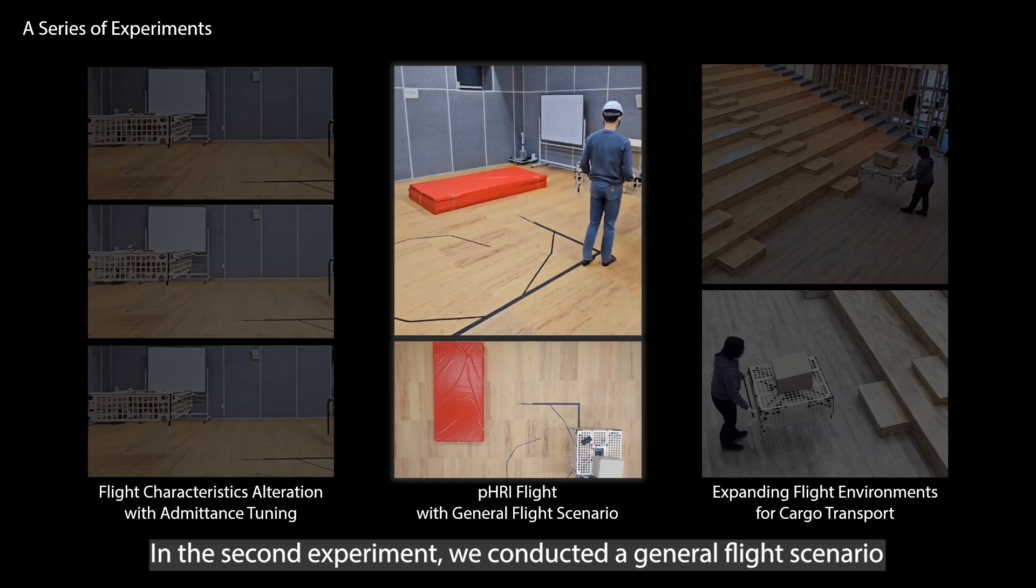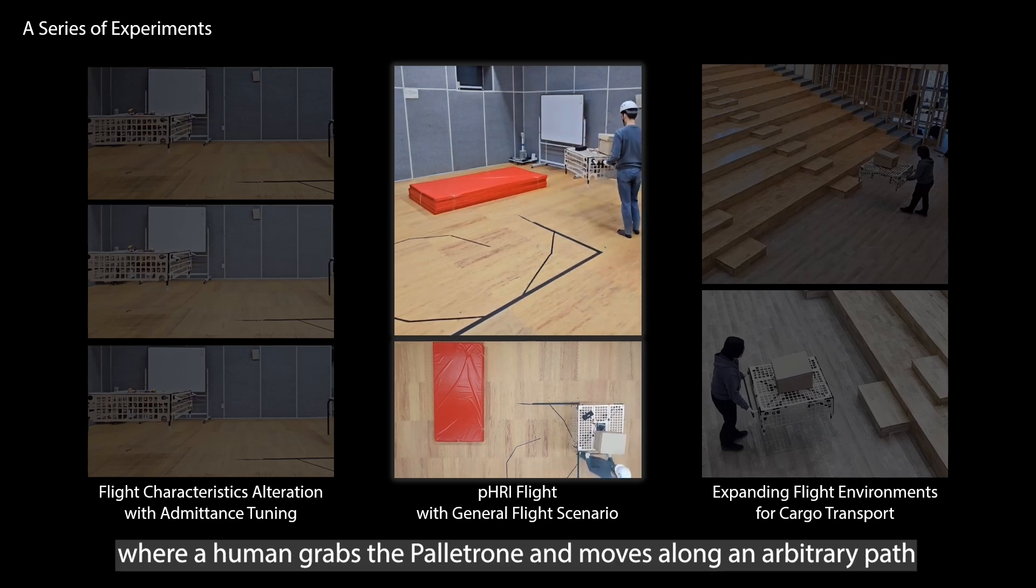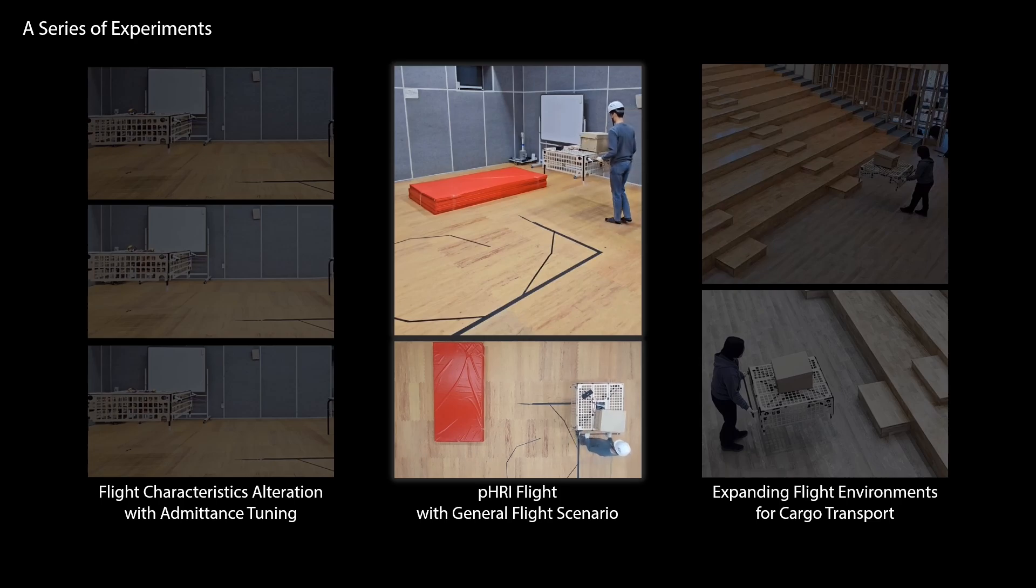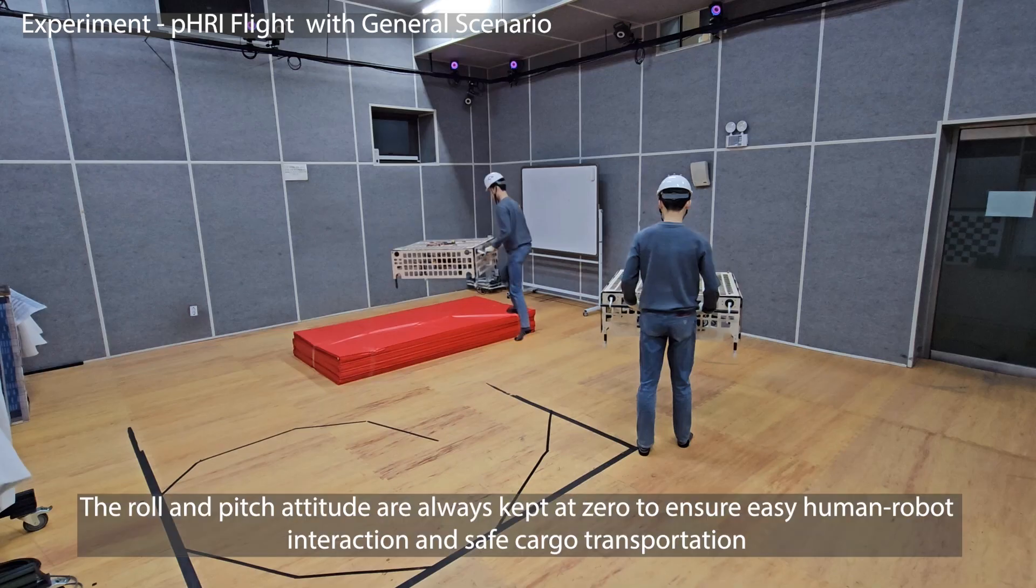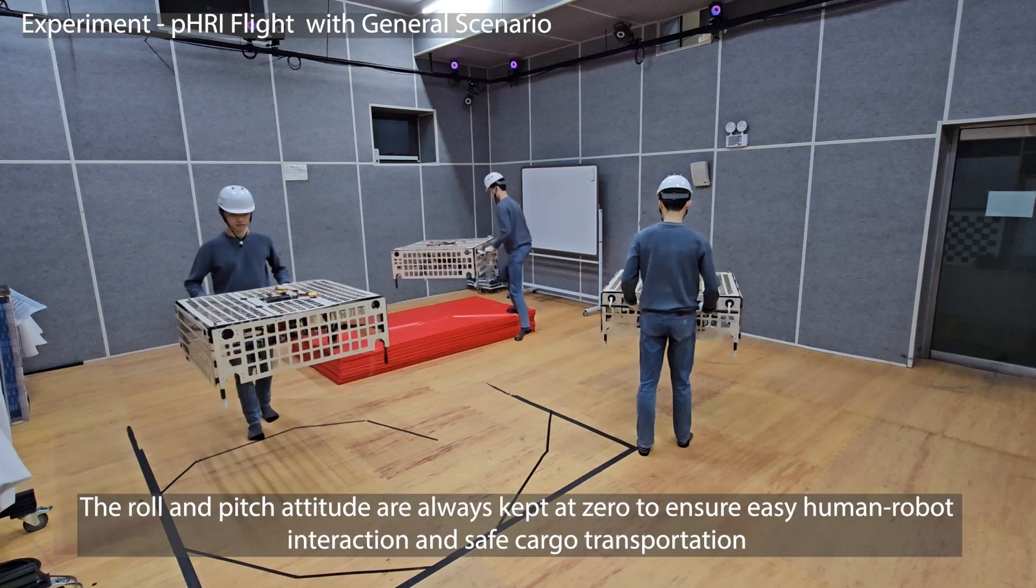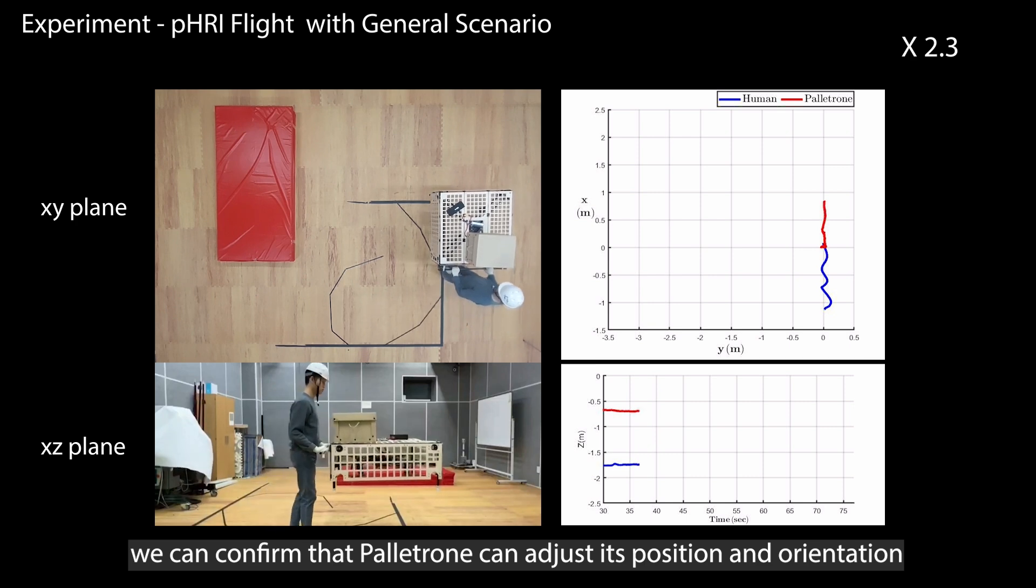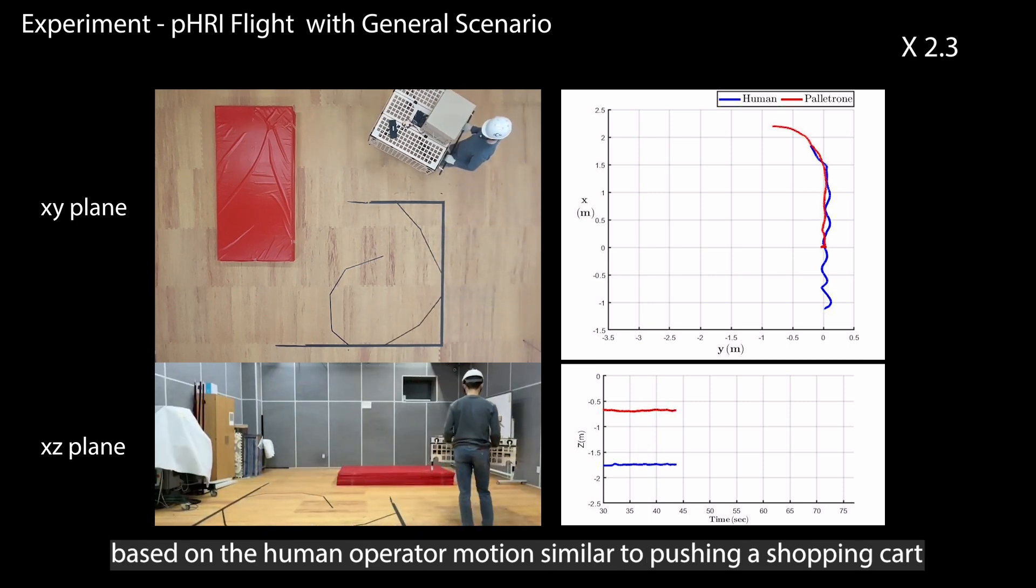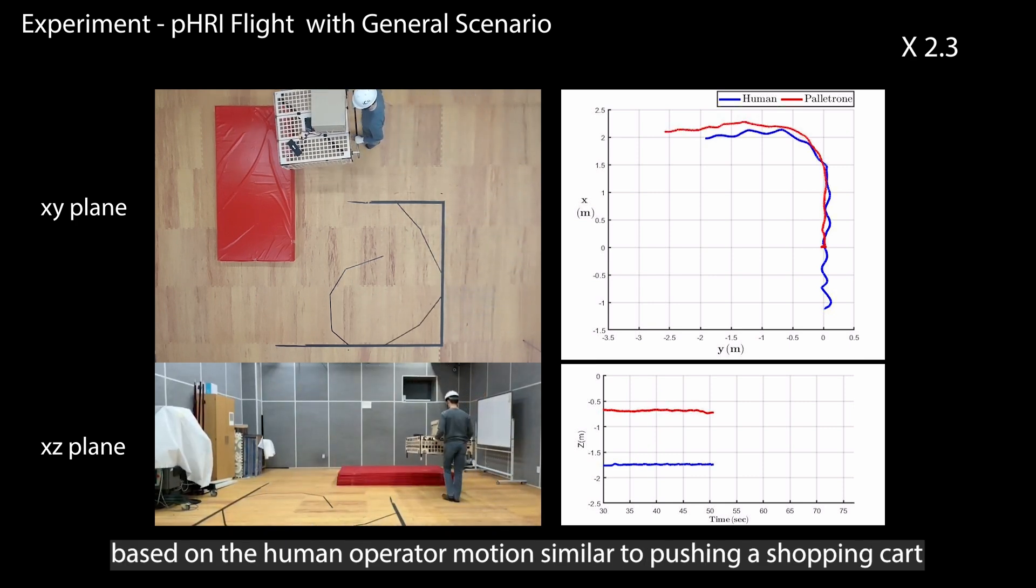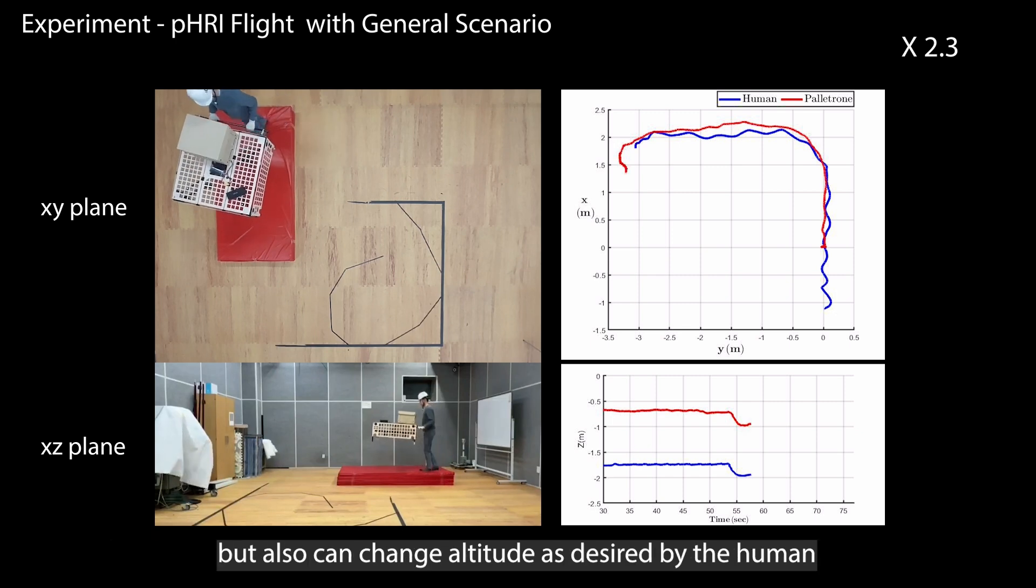In the second experiment, we conducted a general flight scenario where a human grabs the Palletron and moves along an arbitrary path. The roll and pitch attitude are always kept at zero to ensure easy human-robot interaction and safe cargo transportation. With this experiment, we can confirm that Palletron can adjust its position and orientation based on the human operator motion similar to pushing a shopping cart, but also can change altitude as desired by the human.